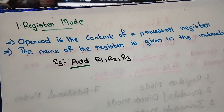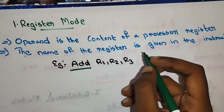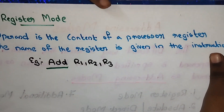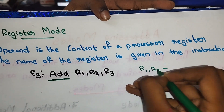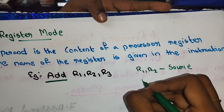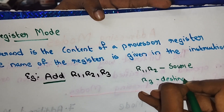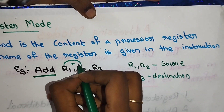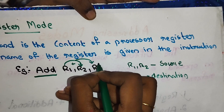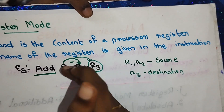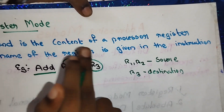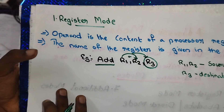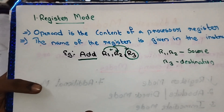In ADD R1, R2, R3: R1 and R2 are the source operands. R3 is the destination, where the result is stored. So R1 and R2 are the source registers, their values are added, and the result is stored in R3. This is the register addressing mode — the register serves as both source and destination.